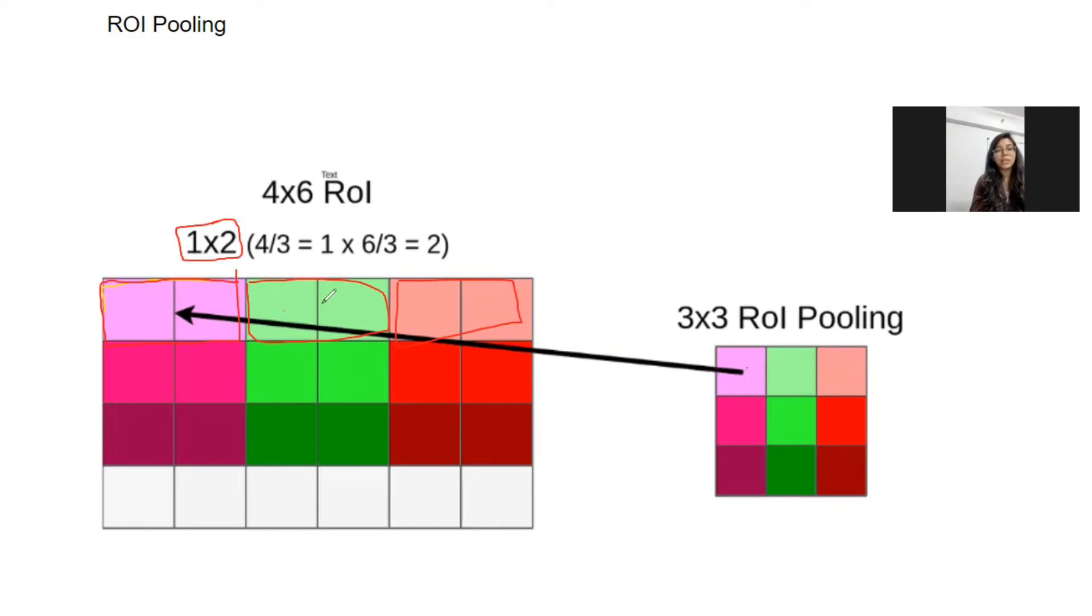Then it will take the information, the maximum value of these two, and we're going to save it inside this row and this column. Again, like this, like this. Then again, here also, it will do the same thing. It is going to apply the max pooling on 1 by 2 stride. And this is how we are going to create our region of interest with the size 3 by 3.